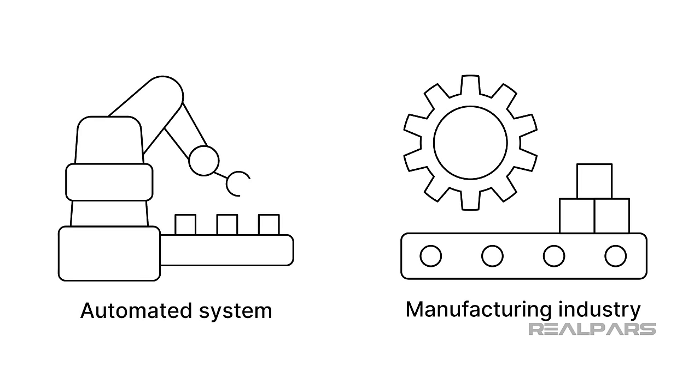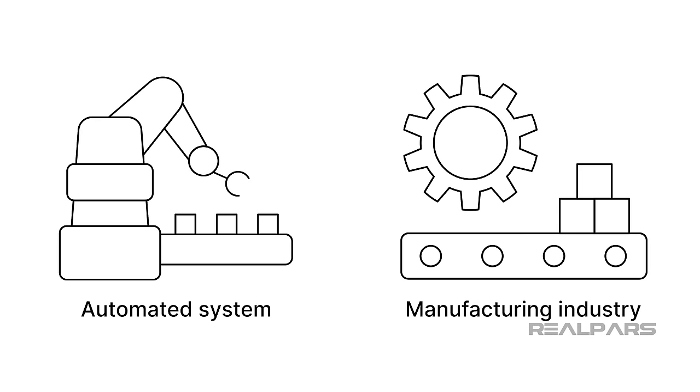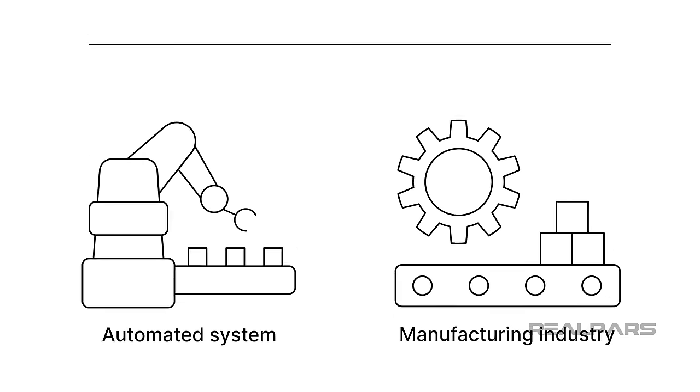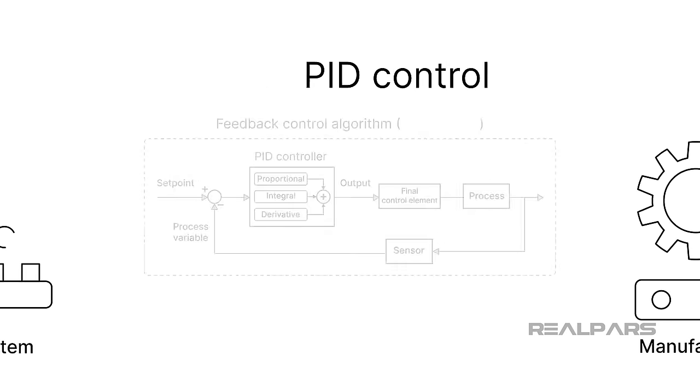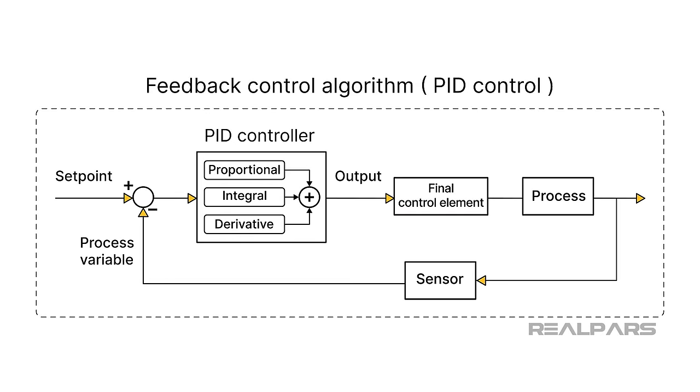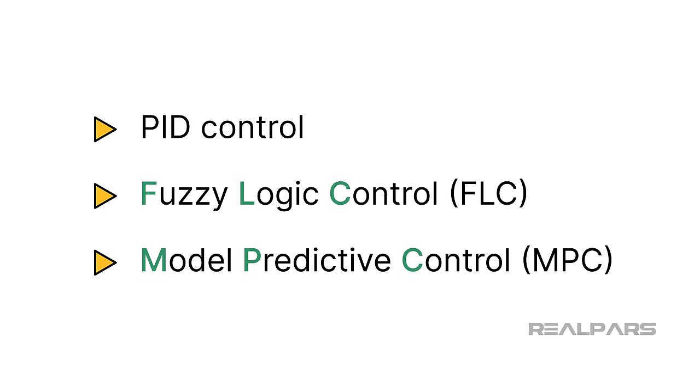Almost everyone who has worked in automated systems and manufacturing industries will likely tell you that the gold standard for process control applications is PID control. Most industrial control loops utilize some combination of PID control. In this video, we'll discuss PID control and will also introduce you to two advanced techniques: fuzzy logic control and model predictive control or MPC.